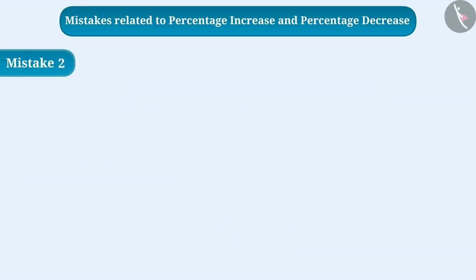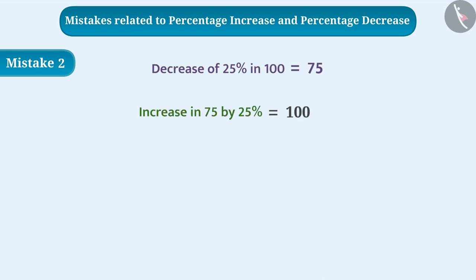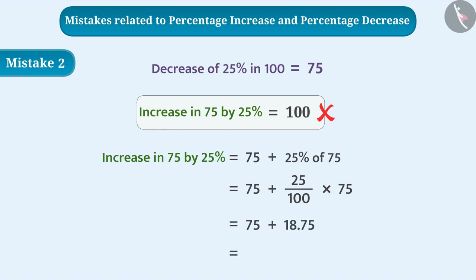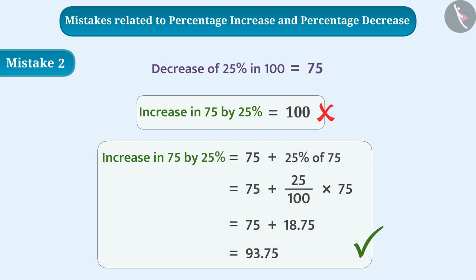Mistake 2: If there is a decrease of 25 percent in 100, the result is 75. Some children assume that to get back to 100 they need to increase 75 by 25 percent — but this is wrong. The correct calculation is: 75 + (25/100) × 75 = 75 + 18.75 = 93.75. The result is not 100, showing that percentage decrease and increase are not symmetric.